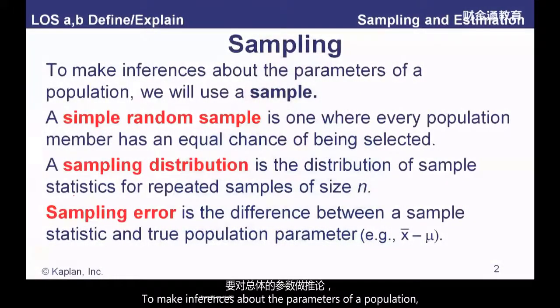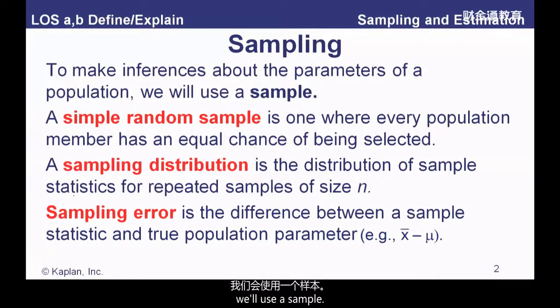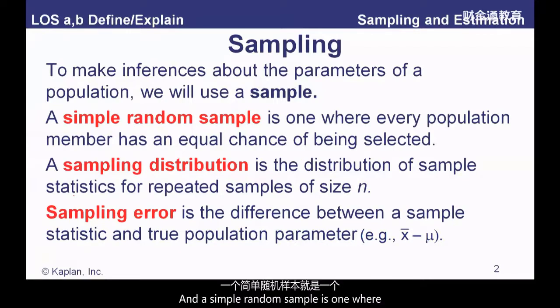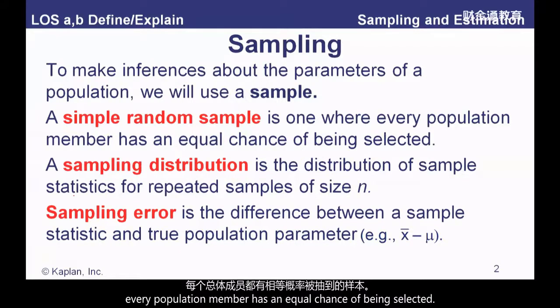To make inferences about the parameters of a population, we'll use a sample. A simple random sample is one where every population member has an equal chance of being selected.